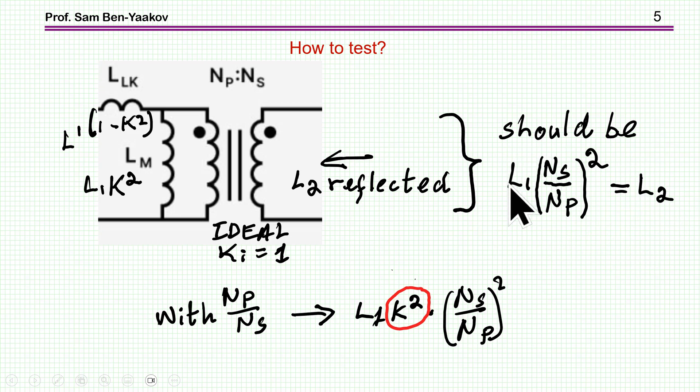This is what you should get. Now, if this ratio here is Np over Ns, as shown here in this circuit, then when I reflect this part, this is open circuit here, I reflect this part to the primary, I have L1 k² times this turns ratio squared, and this is what I'm getting.